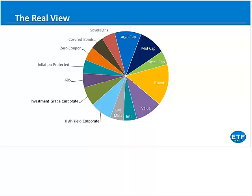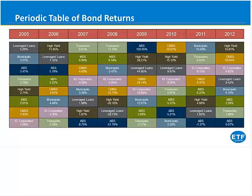This is a tremendous opportunity for the advisor community, because they can tailor client portfolios to unique and precise investment objectives at a low cost. Why would you want to own a diversified fixed income portfolio to begin with? My answer is: because every dog has his day. This chart shows the top performing fixed income segment in any given year from 2005 to 2012. There's no consistency as to the top performing segment, which strongly suggests that unless you have a crystal ball, you might want to own a diversified portfolio comprising multiple fixed income segments.